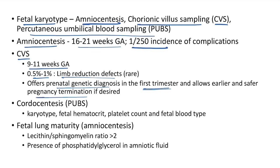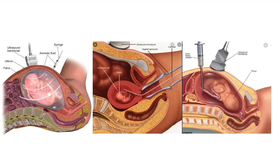PUBS (cordocentesis) allows karyotyping, estimation of fetal hematocrit, platelet count, and fetal blood type. To assess fetal lung maturity, amniocentesis is done to determine the lecithin/sphingomyelin (L/S) ratio — if >2, the lung is mature. Presence of phosphatidylglycerol in amniotic fluid also indicates a mature fetal lung. Images show amniocentesis, chorionic villus sampling, and cordocentesis — all guided by ultrasound.